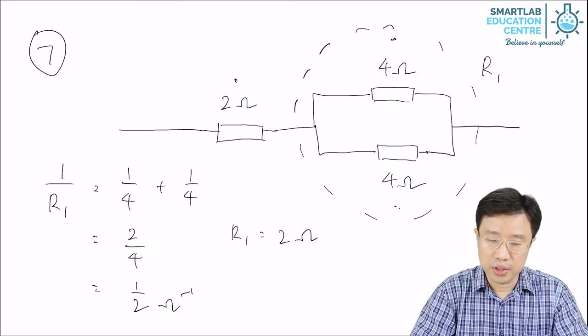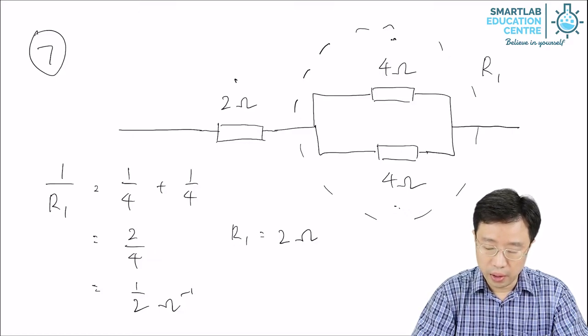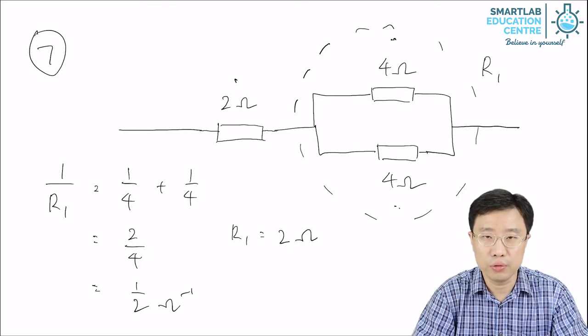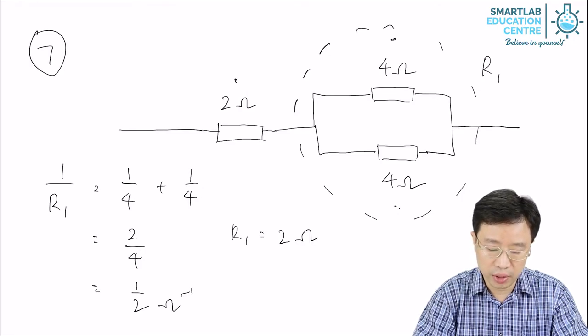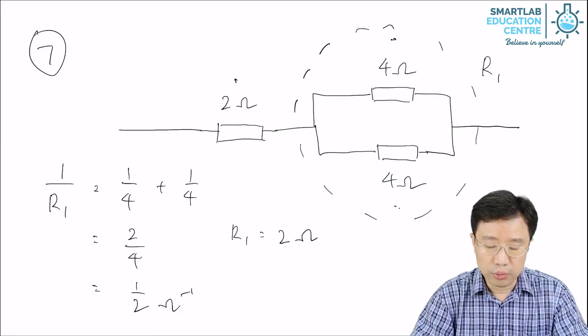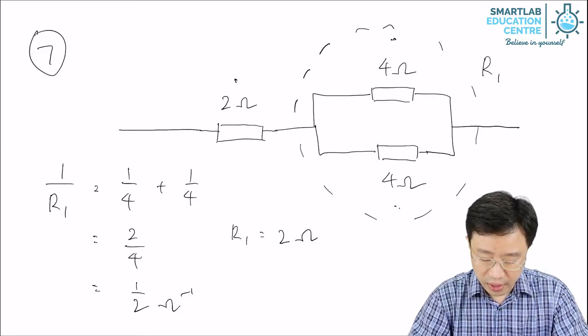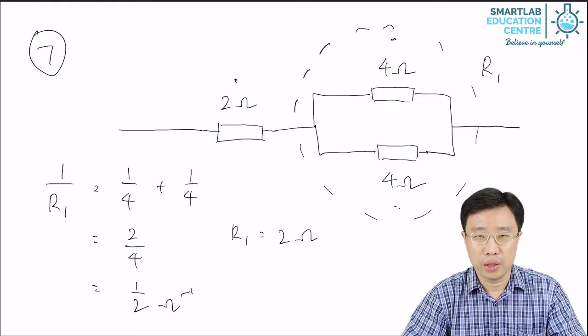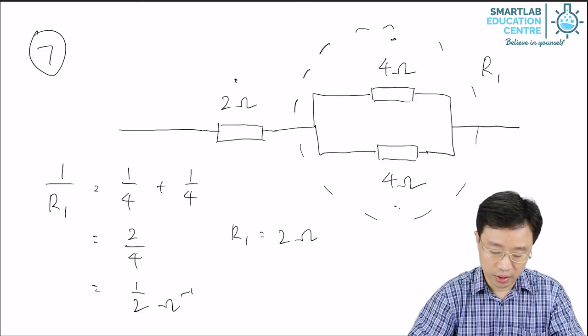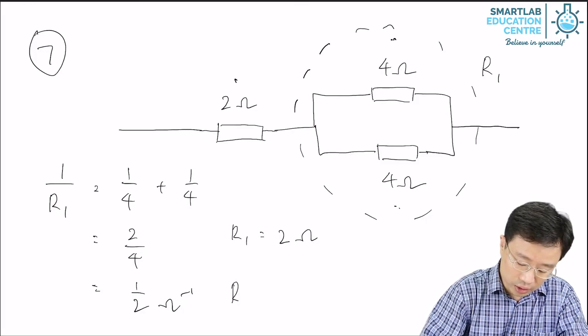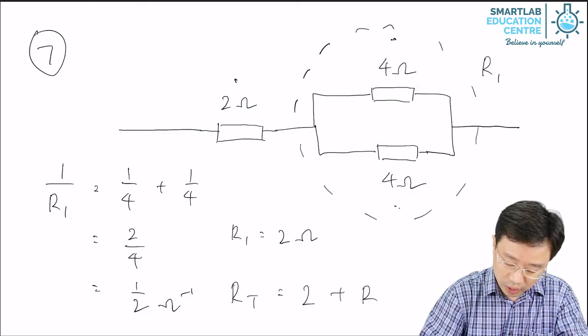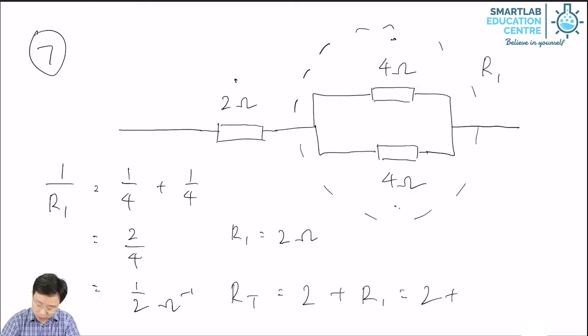Once we get the resistance R1, and knowing that this parallel arrangement of the two 4-ohm resistors is in series with the 2-ohm resistor, we just add R1 to 2. So the total effective resistance RT is equal to 2 plus R1, equals 2 plus 2, equals 4 ohms.